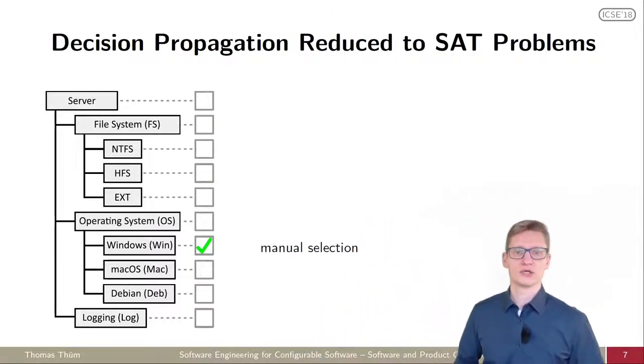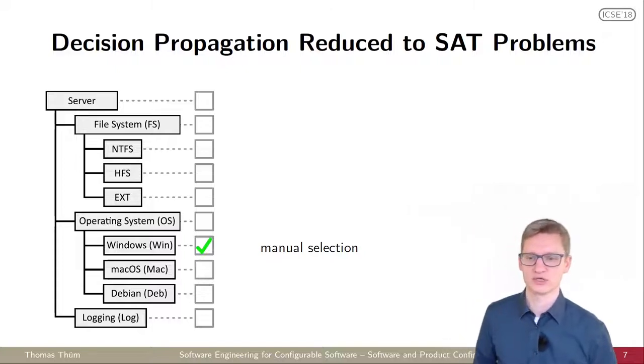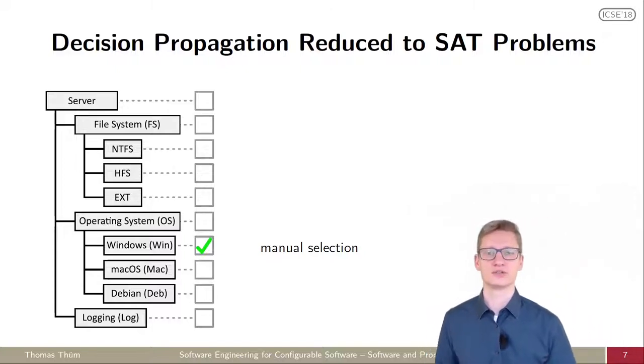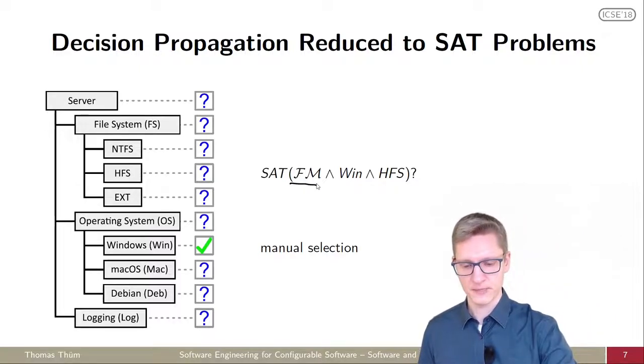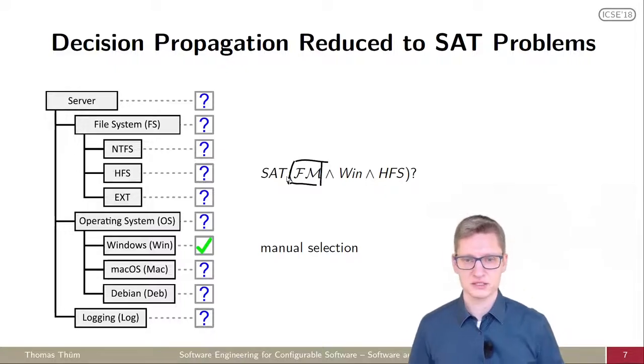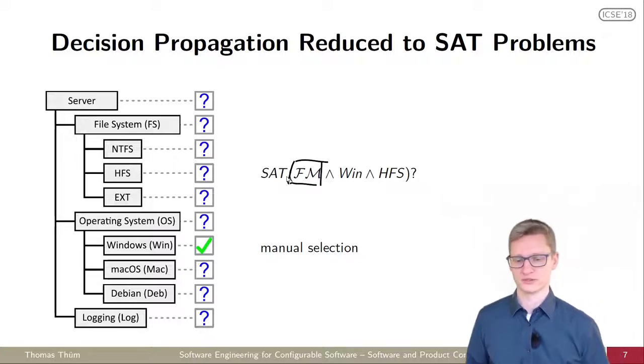To explain one approach that we've developed, I would like to guide you to this small example. The idea is to propagate the knowledge that we have about the configuration. When the user selects the feature Windows, we want to find out which other features are still available. What we do for this is we translate the feature model into a propositional formula. The formula is given here. We have just a propositional formula. The variables are representing the features. If a variable is true, then it means the feature is selected. If it's false, then it means it's not selected. The formula evaluates to true if the combination of features is valid.